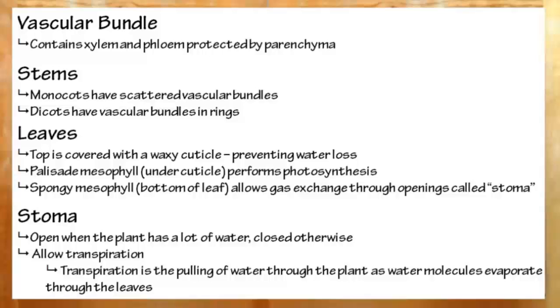Next up, stems. Stems have these things called vascular bundles. It's cortex, and in the center, xylem, phloem, and some more ground tissue, parenchyma, just like the cortex.